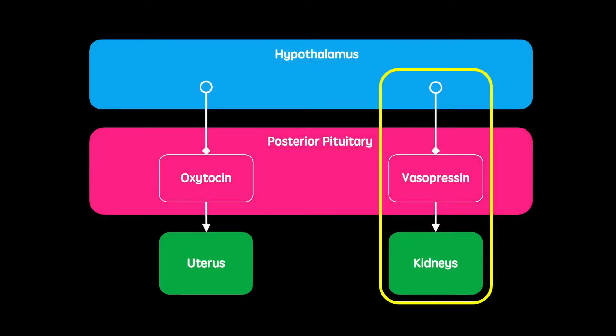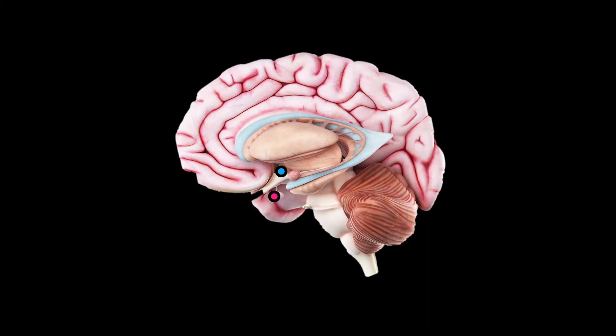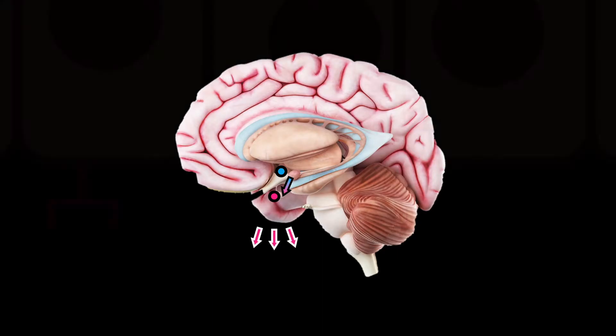Vasopressin is one of the two main neuroendocrine hormones released by the posterior pituitary gland. It is actually synthesised in the hypothalamus and then sent down neurons that directly project to the posterior pituitary. When the blood is low in water content — i.e. when you're thirsty — it secretes vasopressin into the bloodstream where it is delivered to the kidneys.